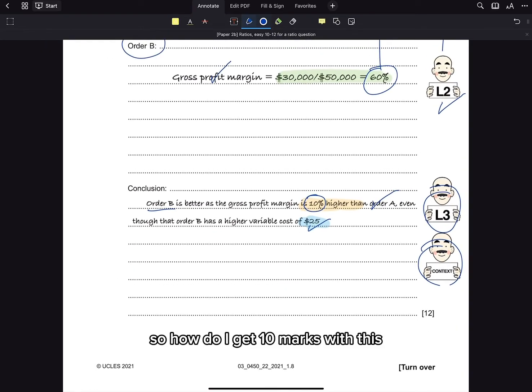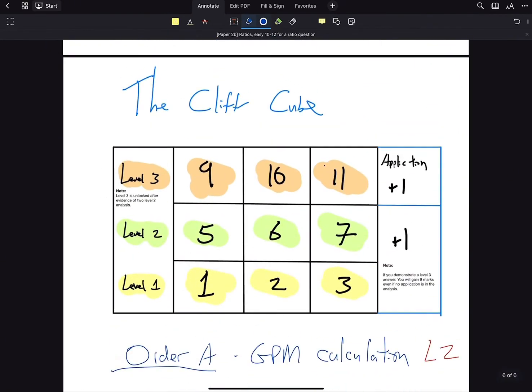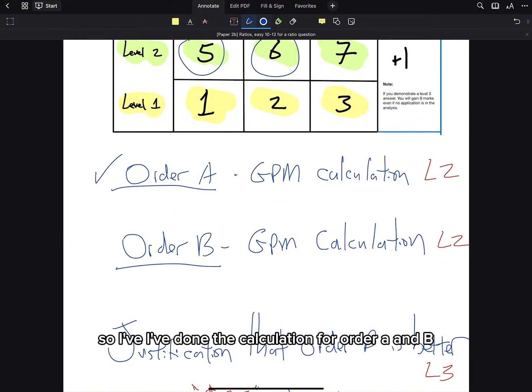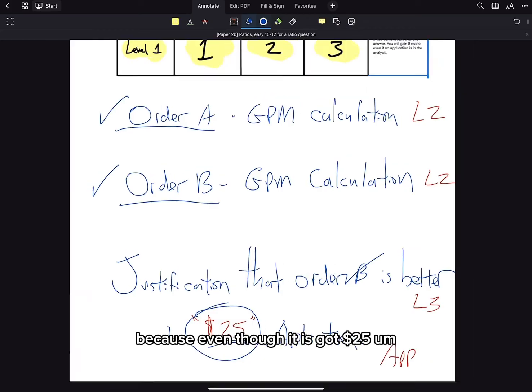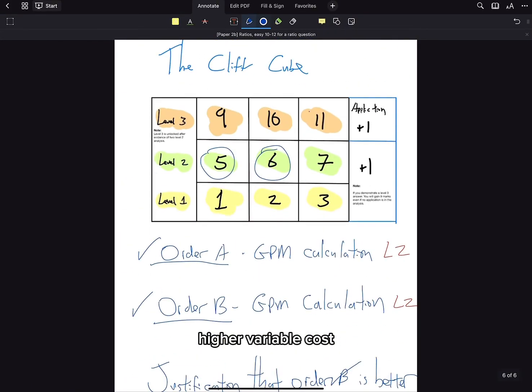So how do I get 10 marks with this? I got two level 2 answers, which gives me access to level 3. So I've done the calculation for order A and B, and my justification that order B is better by 10% even though it has got $25 higher variable costs.